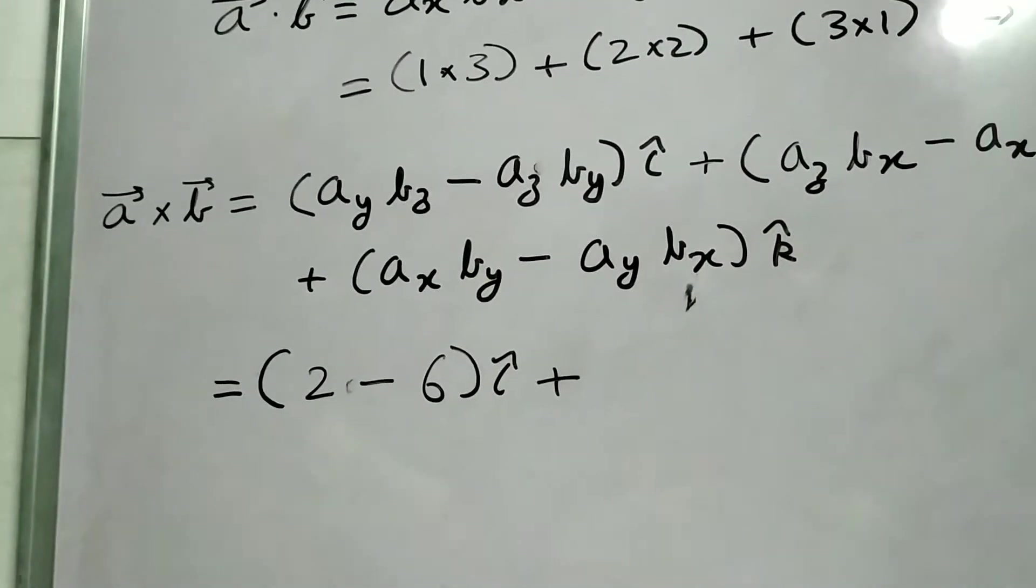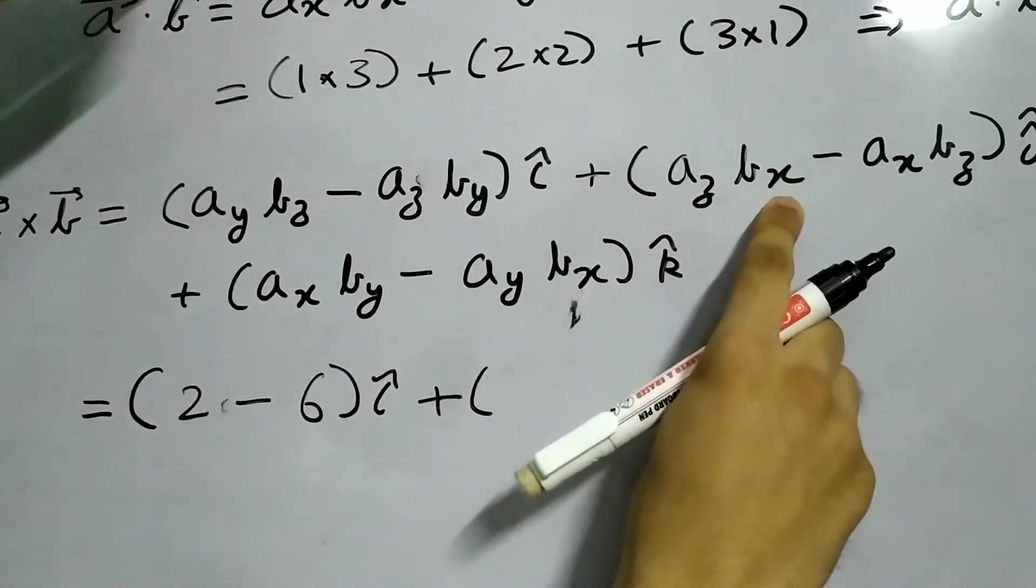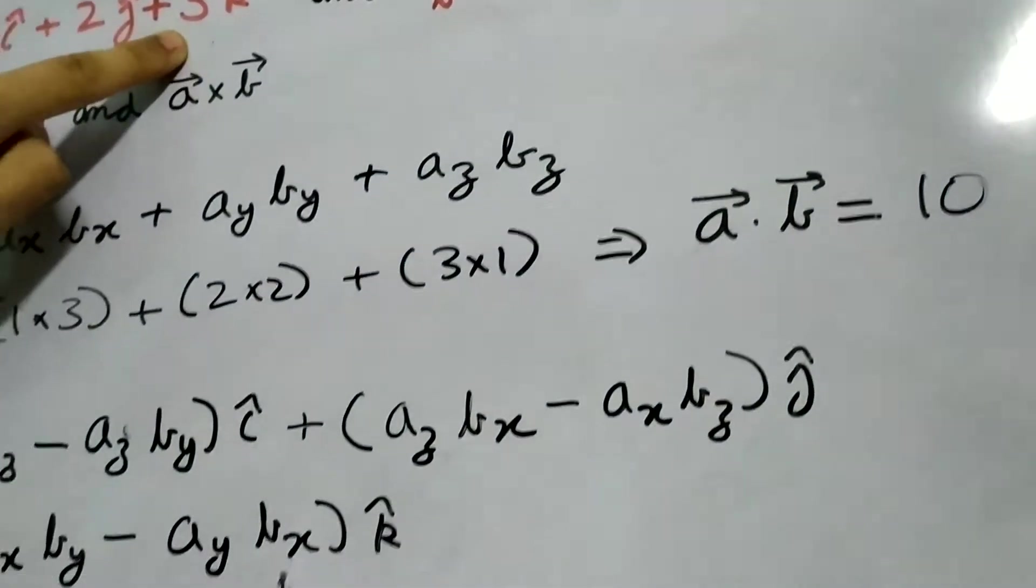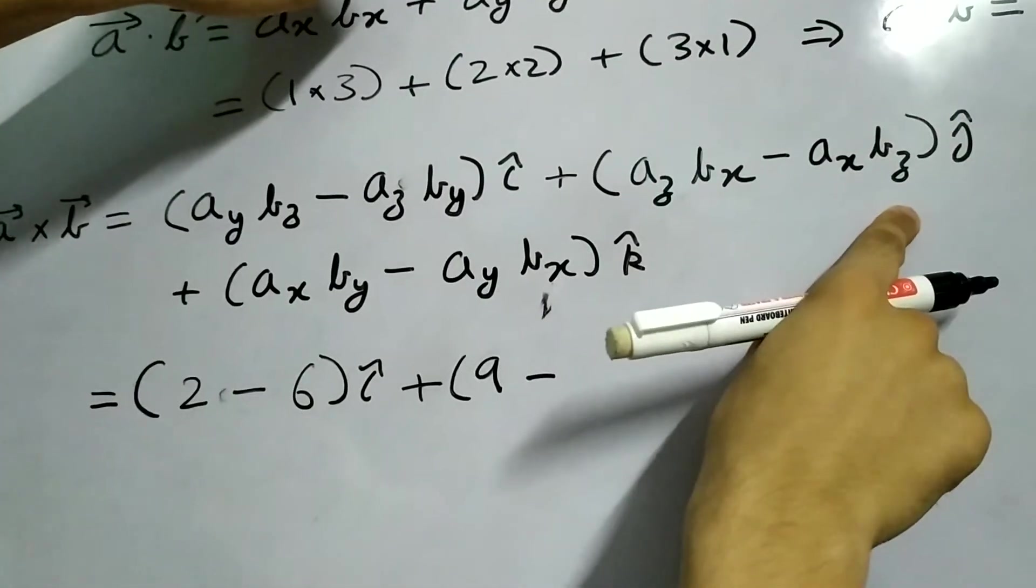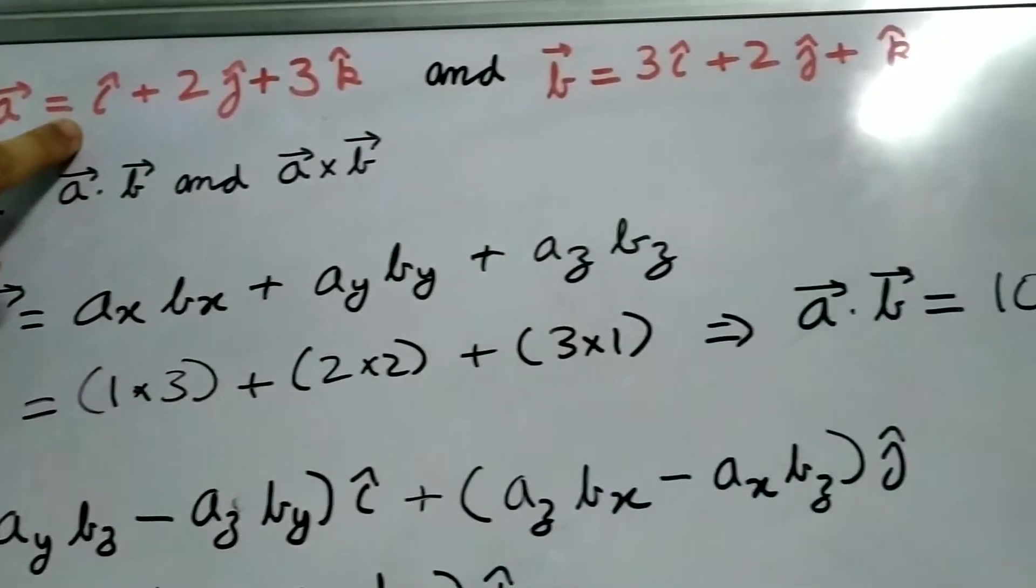Plus A_z B_x. A_z is 3, B_x is also 3, so this will be 9 minus A_x B_z. A_x is 1 and B_z is 1, so this will be 1. So 9 minus 1, J cap.